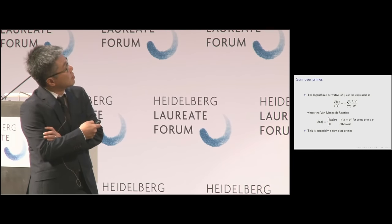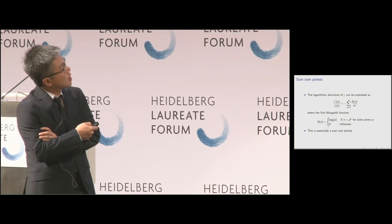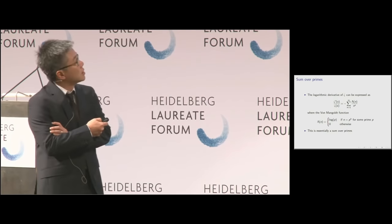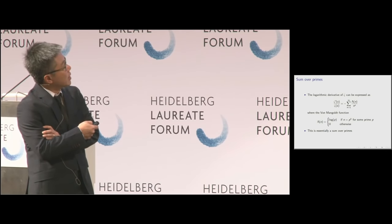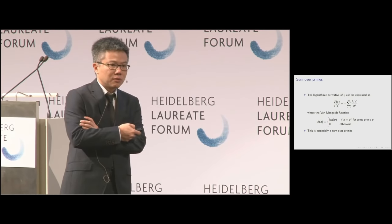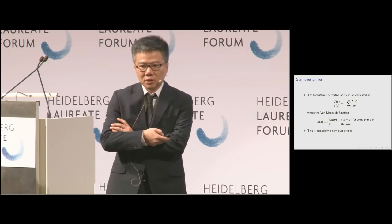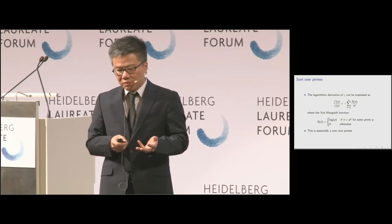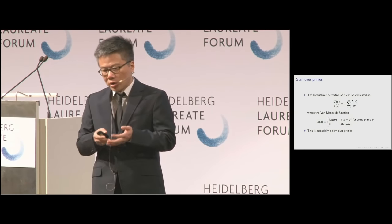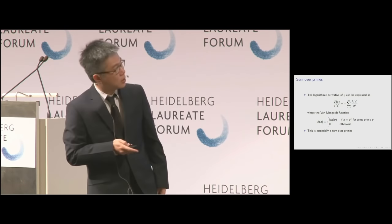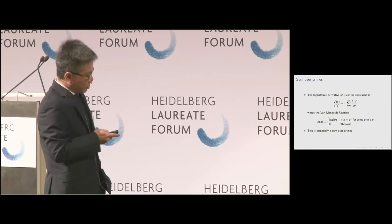So you get this logarithmic derivative of zeta, which you can expand as a sum. What happens is it's almost a sum over prime numbers. The von Mangoldt function lambda(n) equals log p if n is a power of a prime p, and zero otherwise — for example, lambda(6) = 0. So when you take the logarithmic derivative and write it as a Dirichlet series, only the coefficients corresponding to prime powers survive.